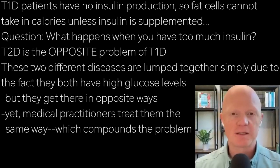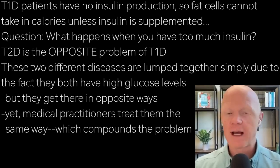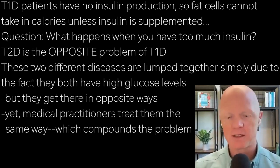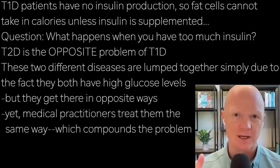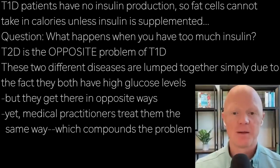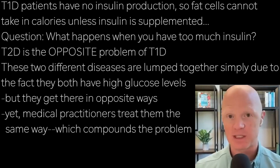This allows us to present the paradigm that type two diabetes is the opposite problem of type one. I think it's one of the great tragedies of modern medicine that we have lumped these two totally opposite diseases into one family because they share one single thing in common — namely that they can both eventually manifest with high glucose levels, but how they get there are exactly opposite scenarios. It's unfortunate because then we believe they need to be treated the same way, which just compounds the problem.